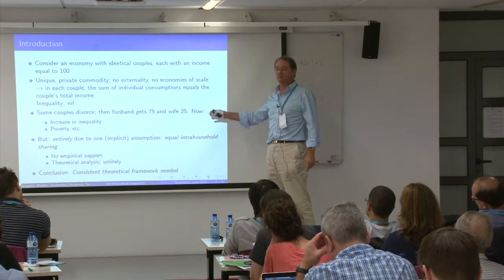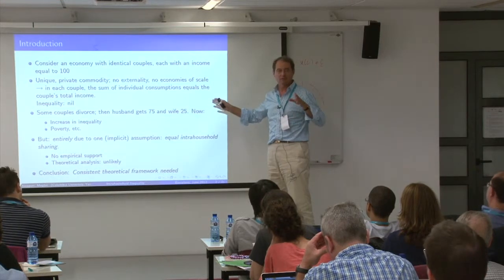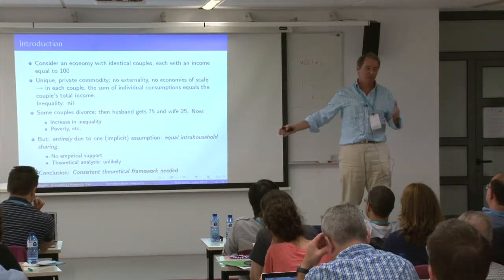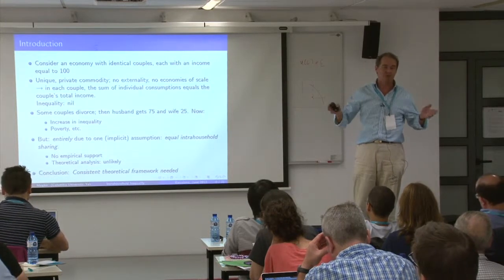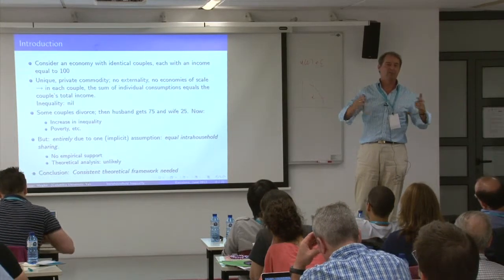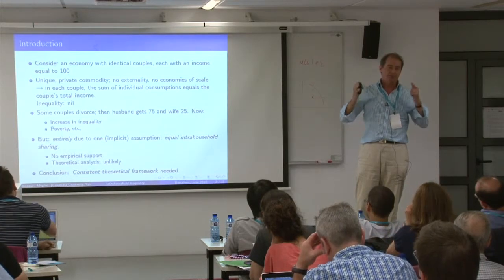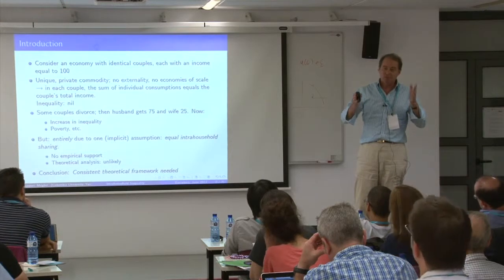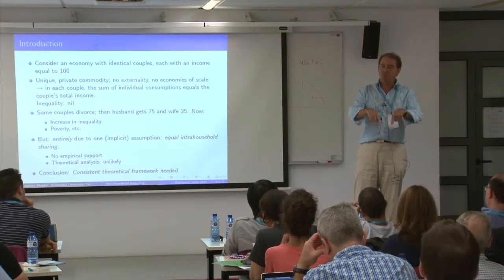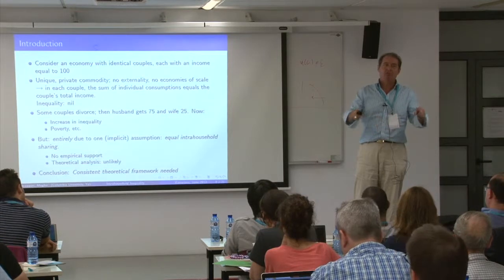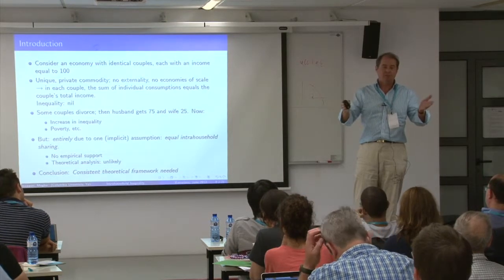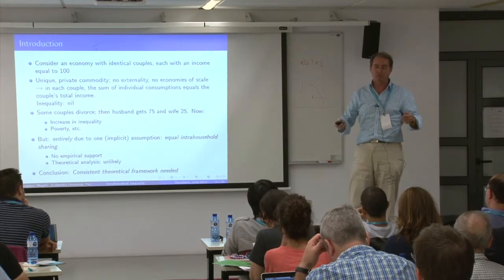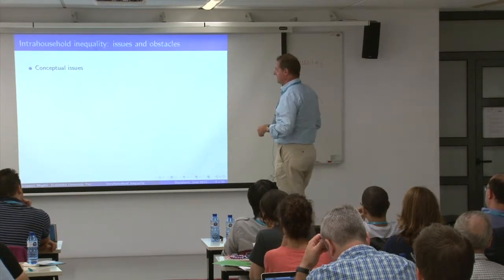The point of all of this is simply: if you're serious about inequality, you cannot afford to just ignore what's going on within the household. Because conclusions published widely — that inequality has increased a lot over the last 20 years — may be completely flawed. It may simply be due to the fact that while people are married, we're not looking at what's going on within marriage. The moment they divorce it becomes obvious, but maybe the inequality was already there. We're simply failing to see it.